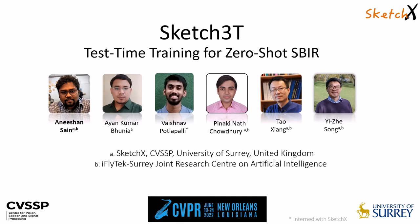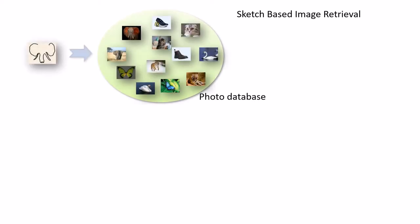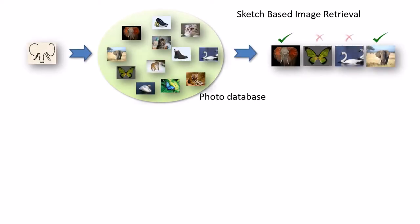Hi, I'm Anishan Sane, a Ph.D. student from SketchX Lab in University of Surrey. I'll be presenting our paper that has been accepted in CVPR 2022. In sketch-based image retrieval we aim to retrieve the appropriate images from a database of photos which are closest to the input query sketch.